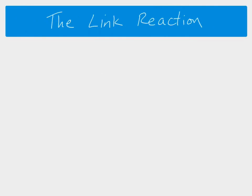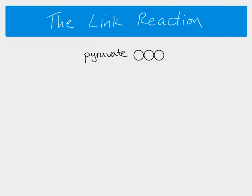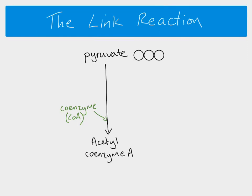The link reaction starts off with our pyruvate molecule, which is a three carbon molecule that has come from glycolysis and was formed in the cytoplasm. It then moves across into the matrix of the mitochondria, and that's where the link reaction takes place. In the mitochondrial matrix, the pyruvate joins with coenzyme A and forms acetyl coenzyme A, which is a two carbon molecule.